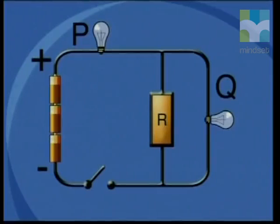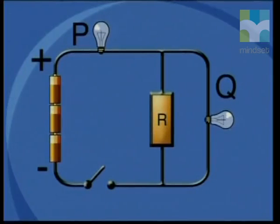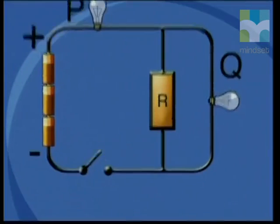Now let's go back to our model and see exactly what is happening as charge moves around the circuit. Here is the circuit again. The switch is in the open position and there is no current passing through the circuit. Look at what is happening inside this length of connecting wire.